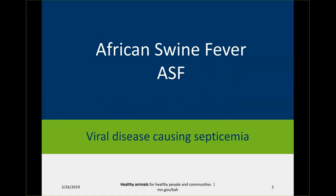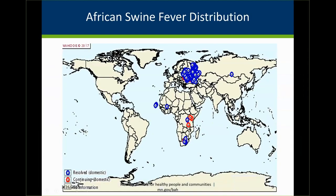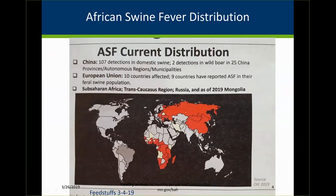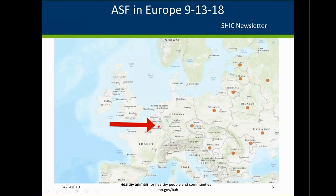African Swine Fever is one of the foreign animal diseases that causes septicemia. It has achieved a lot of notoriety recently because it moved originally from East Africa into the Balkan states and Eastern Europe, and now we know that it's found all throughout Russia and into most of China, Mongolia, and Vietnam. So the distribution has become pretty severe, and it has even been found within a few miles of France in wild boars. The disease is moving quickly and frighteningly close to put the United States at risk.